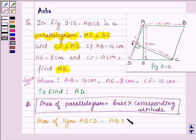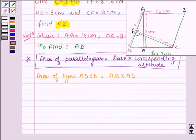We have AB into AE and also area of parallelogram ABCD is equal to AD into FC. Since, if in this parallelogram, if we consider AD as base then the corresponding altitude is CF.